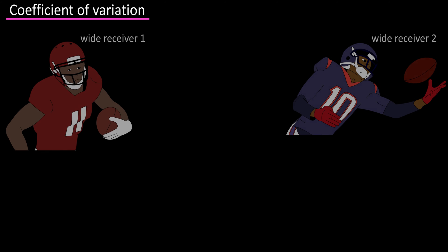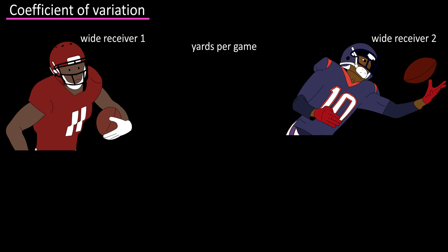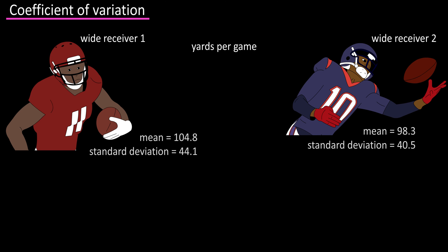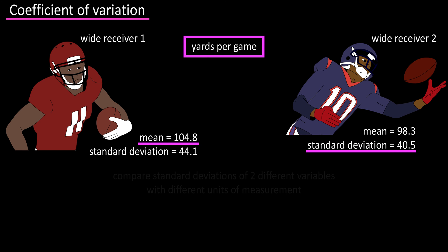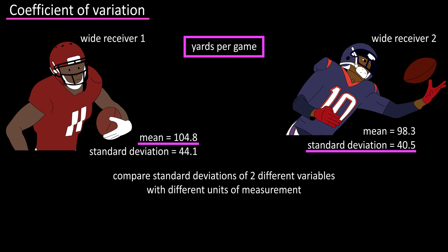In an earlier video we compared two wide receiver statistics for yards per game for the 2018 season. We saw that wideout one had a better mean but wideout two had a lower standard deviation, meaning he was more consistent. Because the units of measure were the same, we could compare their standard deviations directly. But there is a way to compare standard deviations of two different variables with different units of measurement by using what's called the coefficient of variation.